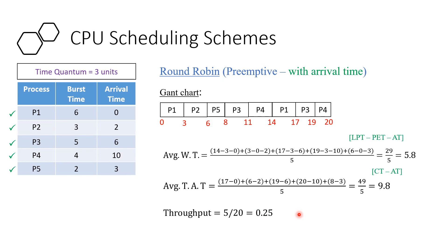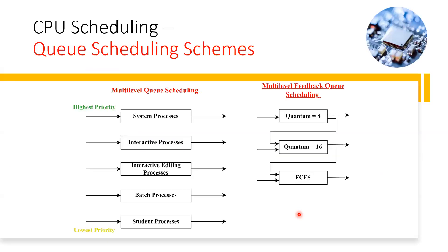So these four scheduling schemes are now complete. The next question is which scheduling schemes are used in our system. For this, there are two schemes: multi-level queue scheduling and multi-level feedback queue scheduling. We will cover these in the next video. Stay blessed. Peace.